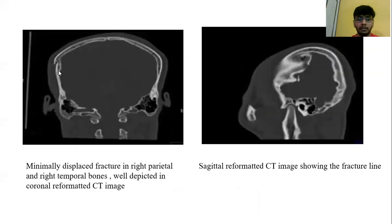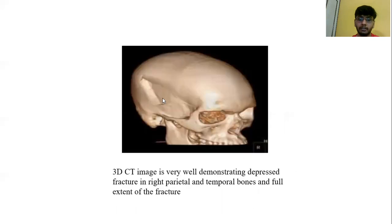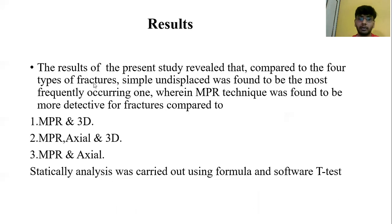This is a minimally displaced fracture in the right parietal and temporal bones, well depicted in the coronal reformatted CT image. The sagittal reformatted CT image shows the fracture line. This is the axial CT image demonstrating the depressed fracture. This is the multiplanar CT image well demonstrating the displaced fracture in the right parietal and temporal bones and the extent of fracture displacement.